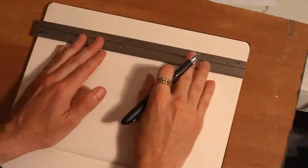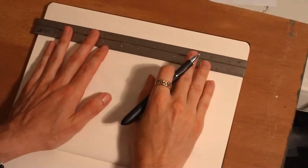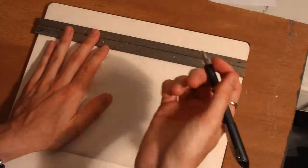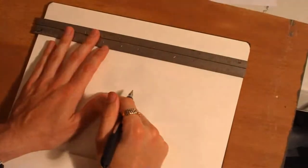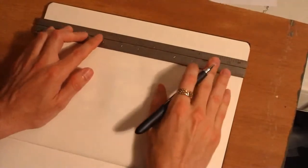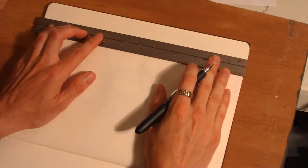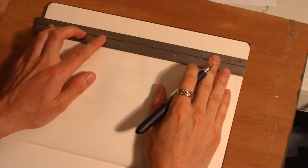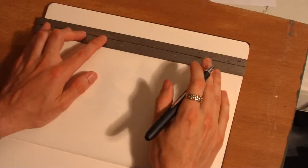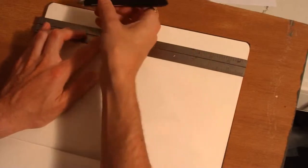All right, three point perspective is defined because you have three vanishing points. That should be fairly self-explanatory, but you're still going to need a horizon line for two of those vanishing points.